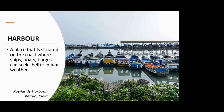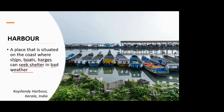Starting with the first term — harbor. Definition-wise, it is just a place on the coast where you can seek shelter, as in your boats, ships, or barges can seek shelter in bad weather. That is nothing but a harbor. This can be any place. The example shown in the photo on the right side is Kohilandi harbor in Kerala — it's not a big harbor, just to give an idea of what a harbor looks like.